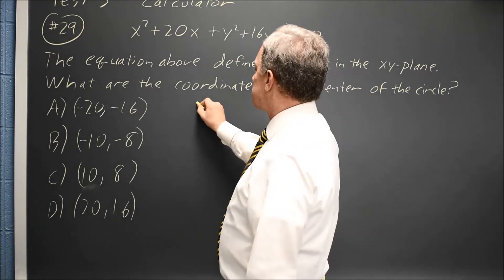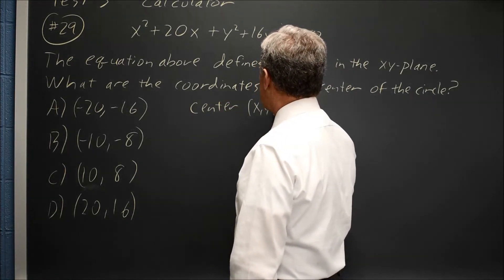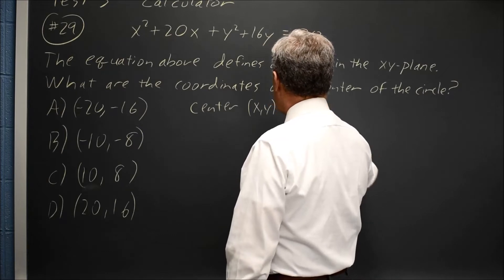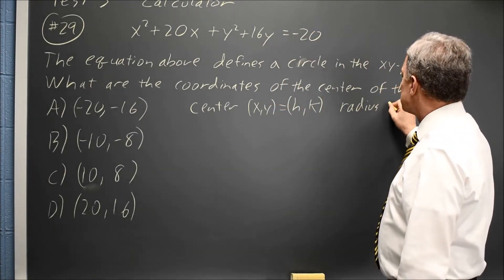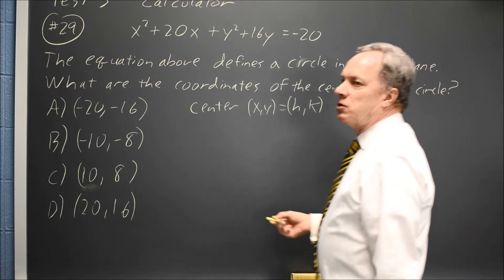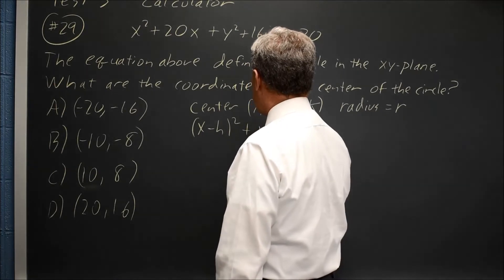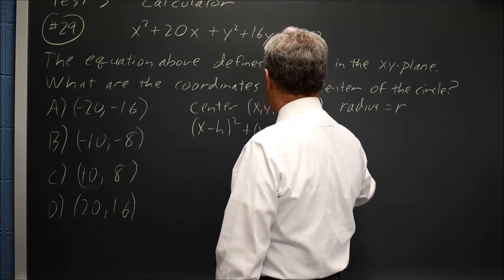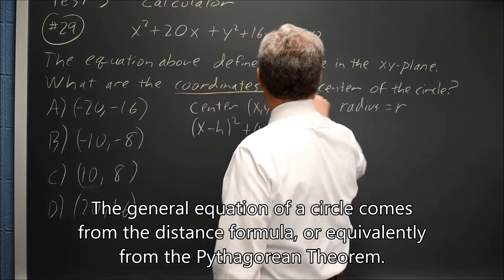I like to remember that if the center has xy coordinates equal to h and k, and the radius of the circle is r, the general equation is (x-h)² + (y-k)² = r², and they're asking for the coordinates of the center.